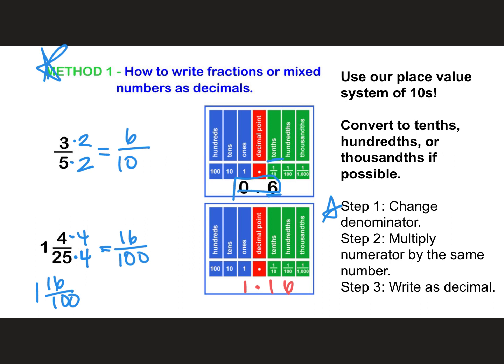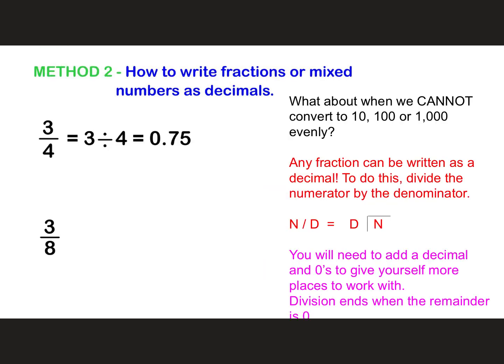So if we can convert the bottom to ten, hundred, or thousandths, that's going to be our easiest way to convert it into a decimal. So always check and start with that first. Now when we can't make the bottom number ten, hundred, or a thousand, that's when we have to move on to this second method, which is to divide. So we can write any fraction as a decimal by dividing the numerator by the denominator. Top divided by bottom, which we set it up like this. Denominator on the outside, numerator on the inside. You are going to end up having to add decimals and zeros, because we are making a decimal here. And we stop when we get a remainder of zero, or if we find that it's going to be a repeating decimal.